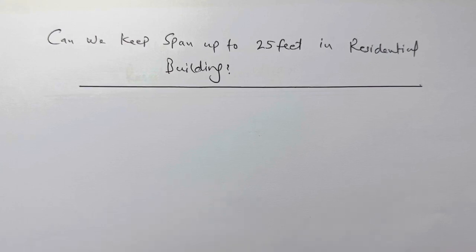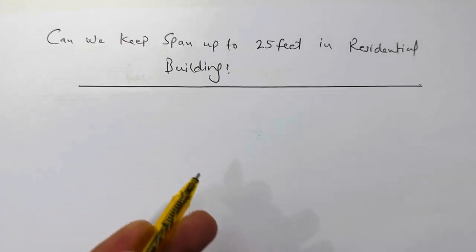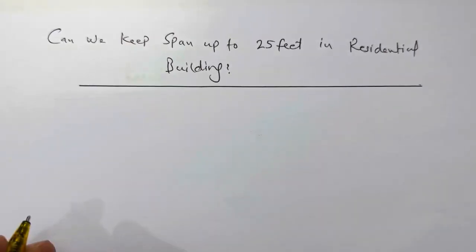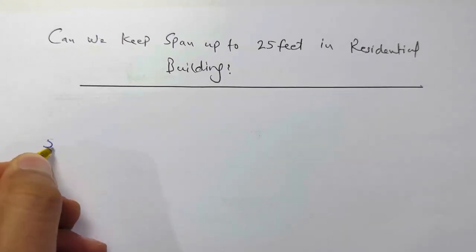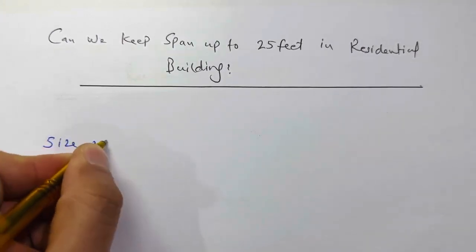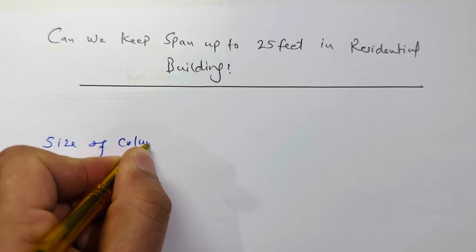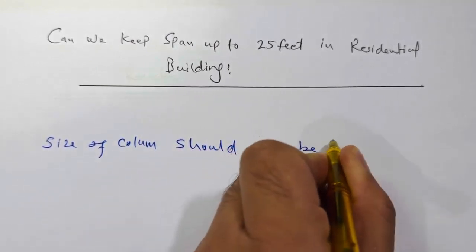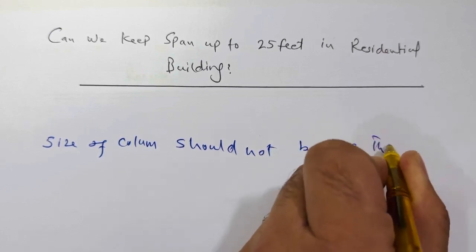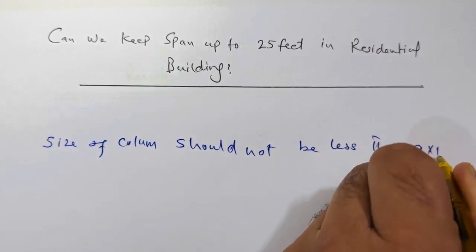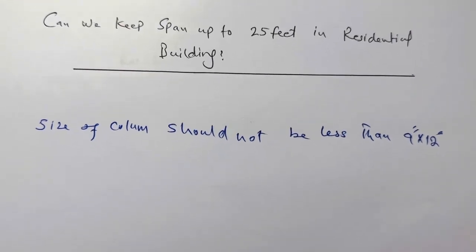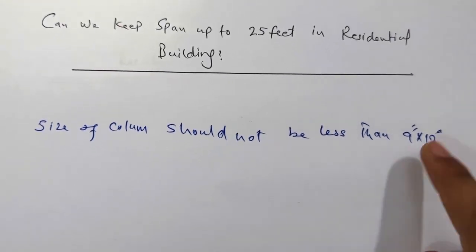Yes, of course we can build up to 25 feet span in residential building. But remember, for this, size of column should not be less than 9 inches by 12 inches. In this case, if the span is up to 25 feet, this is the minimum size.